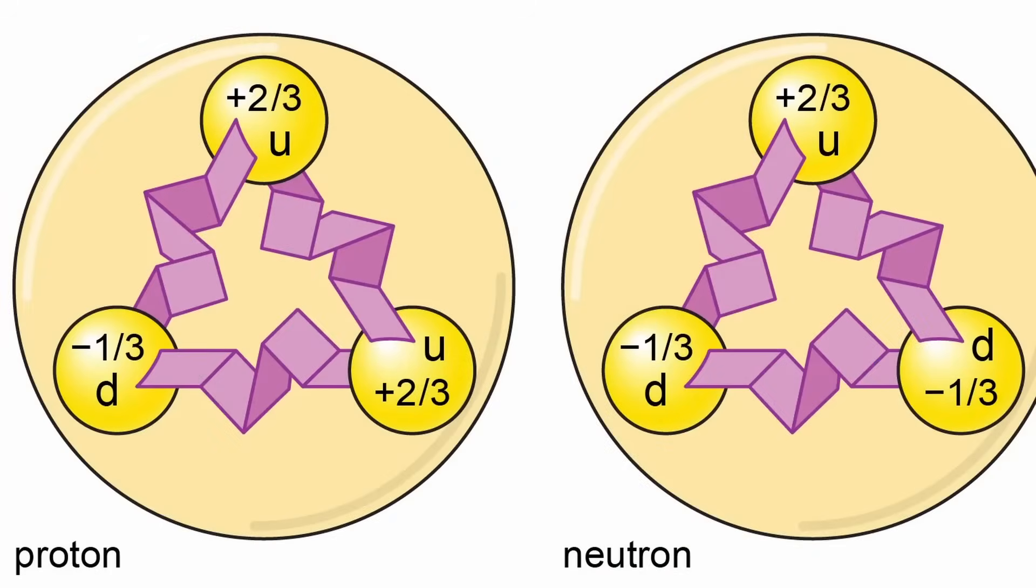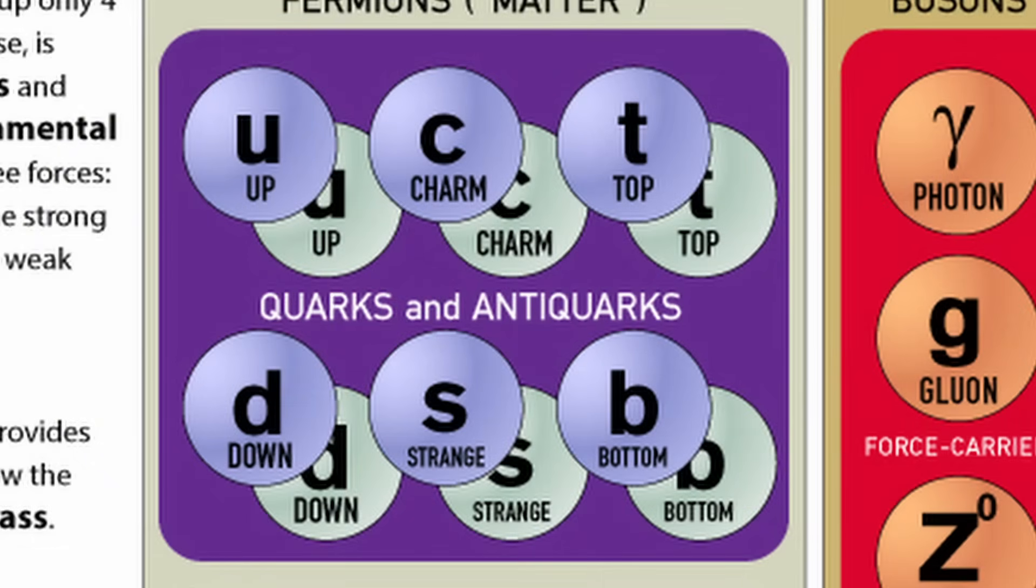Quarks and anti-quarks combined in twos and threes to form heavier particles in a process called quark confinement. Quarks combined with gluons to form protons and neutrons. There are six flavors of quarks: up, down, charm, strange, top, and bottom.